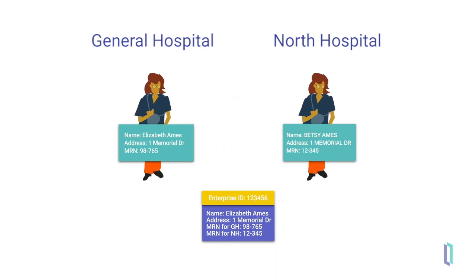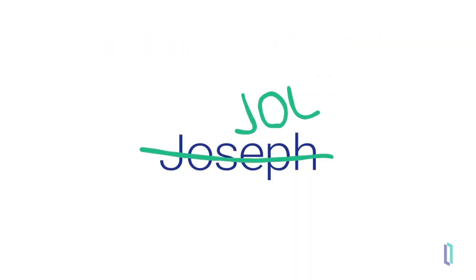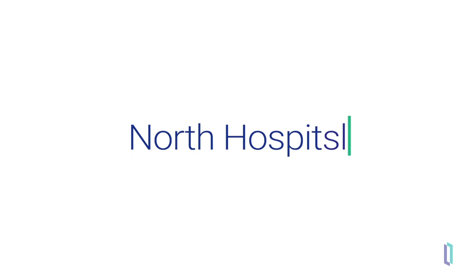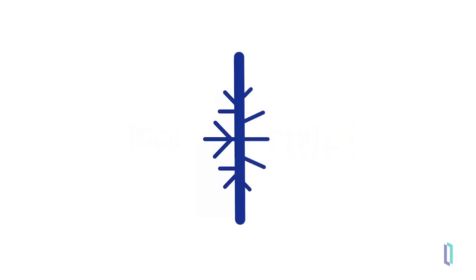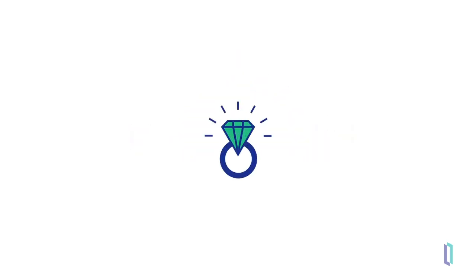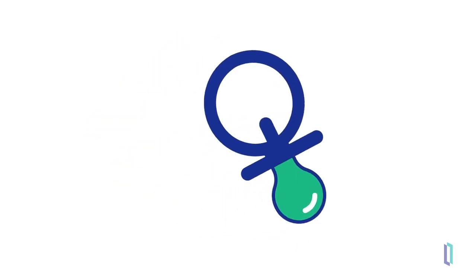Let's take a look at some other examples that make matching difficult. Nicknames, typos, summer or winter home addresses, maiden names, missing information, unknown trauma patients, and unnamed infants.